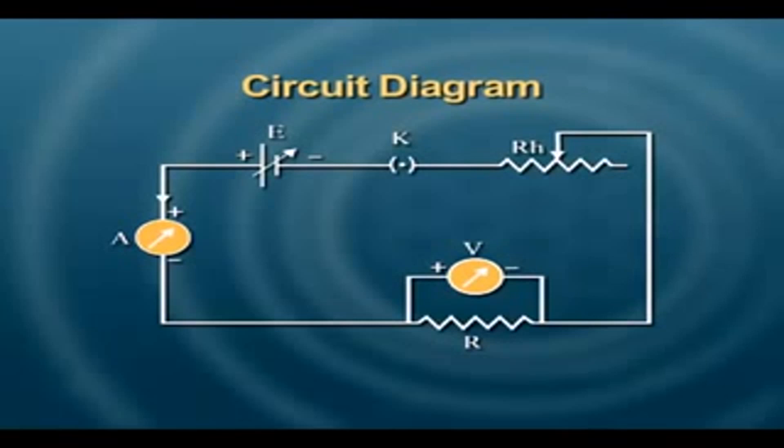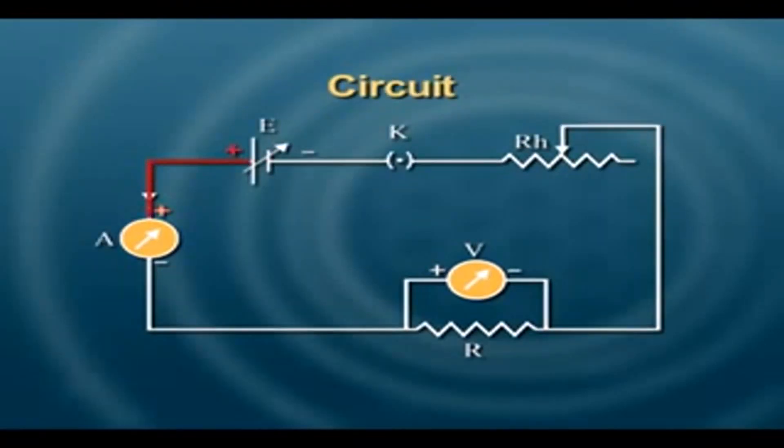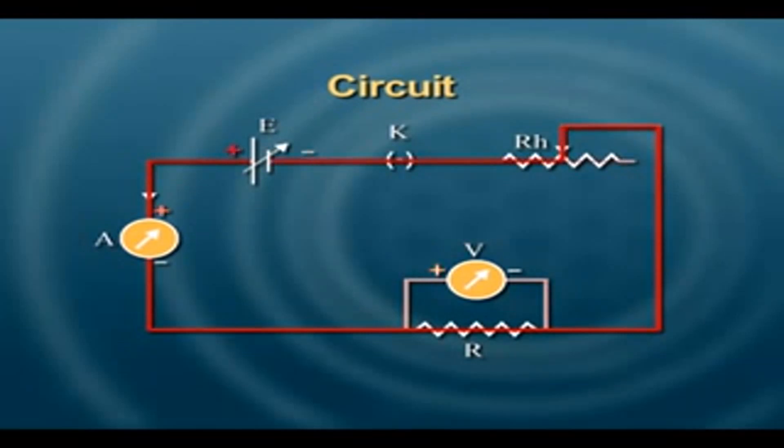In order to revise our circuit and understand it clearly, we must remember that the ammeter should always be placed in series and the voltmeter should always be placed in parallel with the conductor across which we want the potential difference.